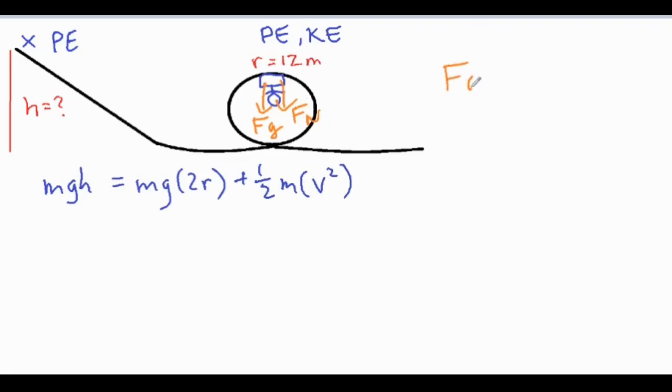That means that the force of gravity plus the normal force equals your centripetal force, and your centripetal force is MV squared over R.